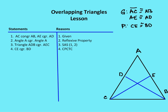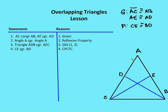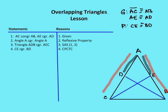I'm going to go through one proof to give you an example of what overlapping triangles might look like. I'm given that AC is congruent to AB — I'll mark that up in the diagram. I'm also given that AE is congruent to AD. And I want to prove that CE is congruent to BD.